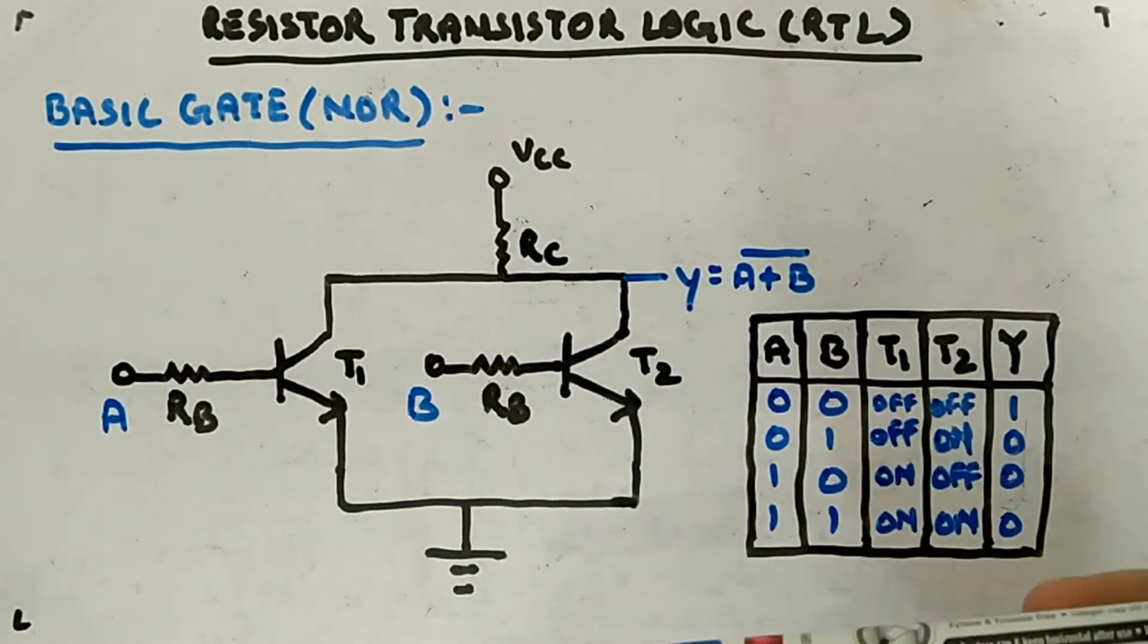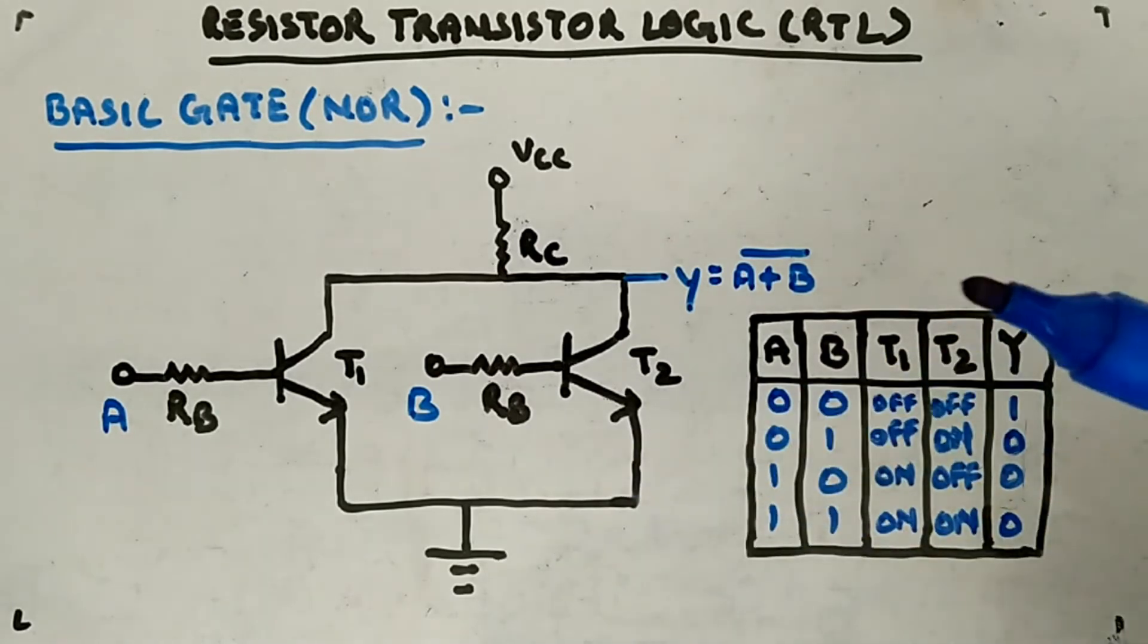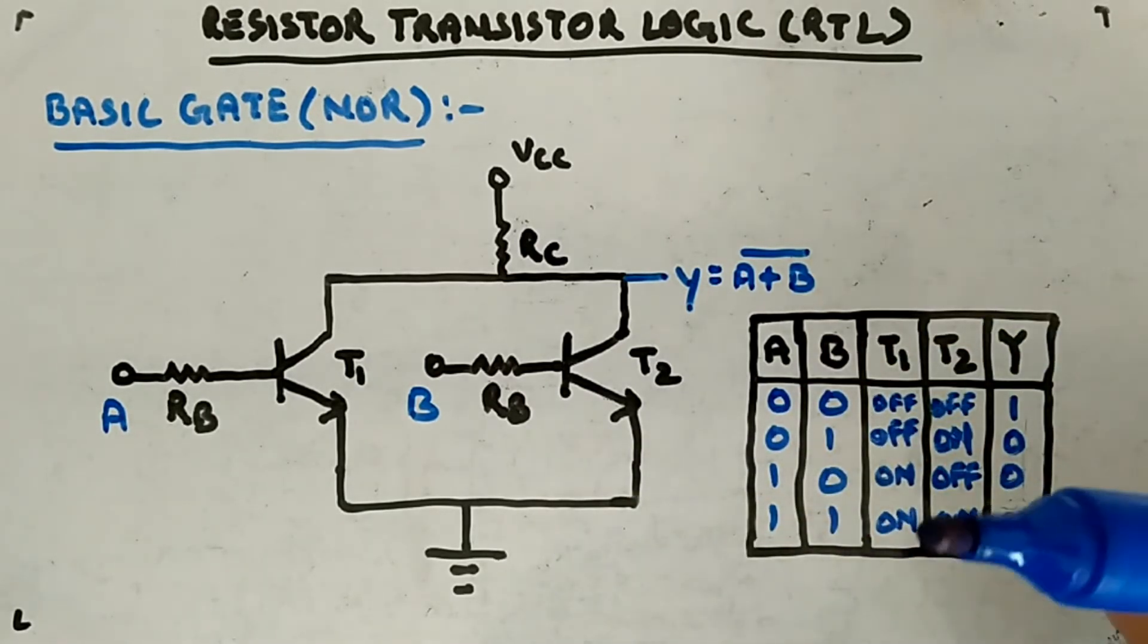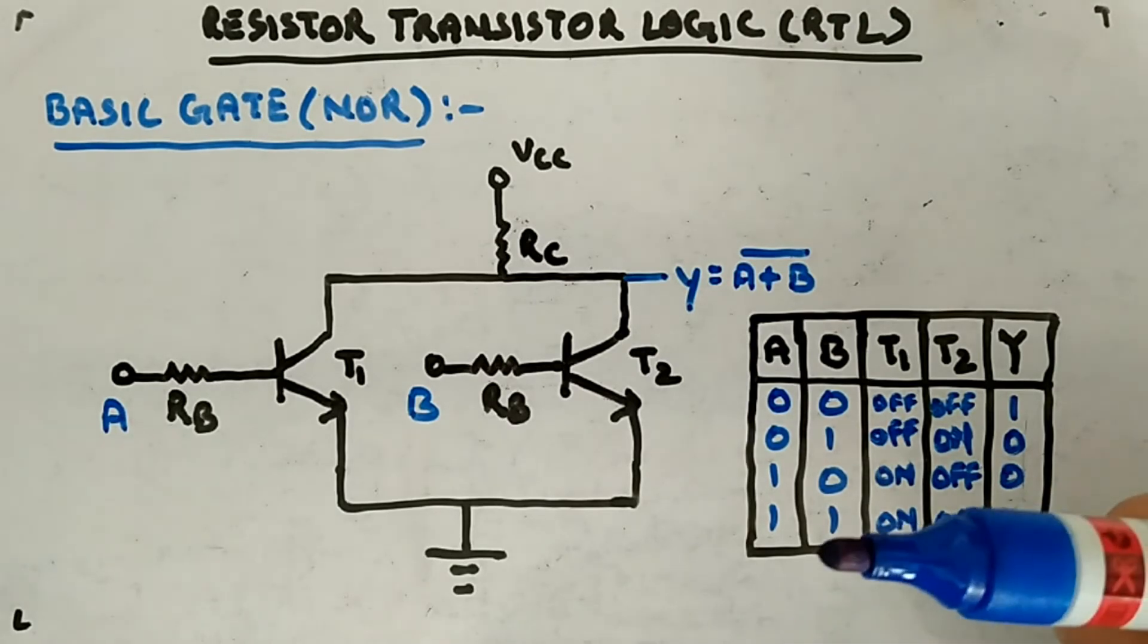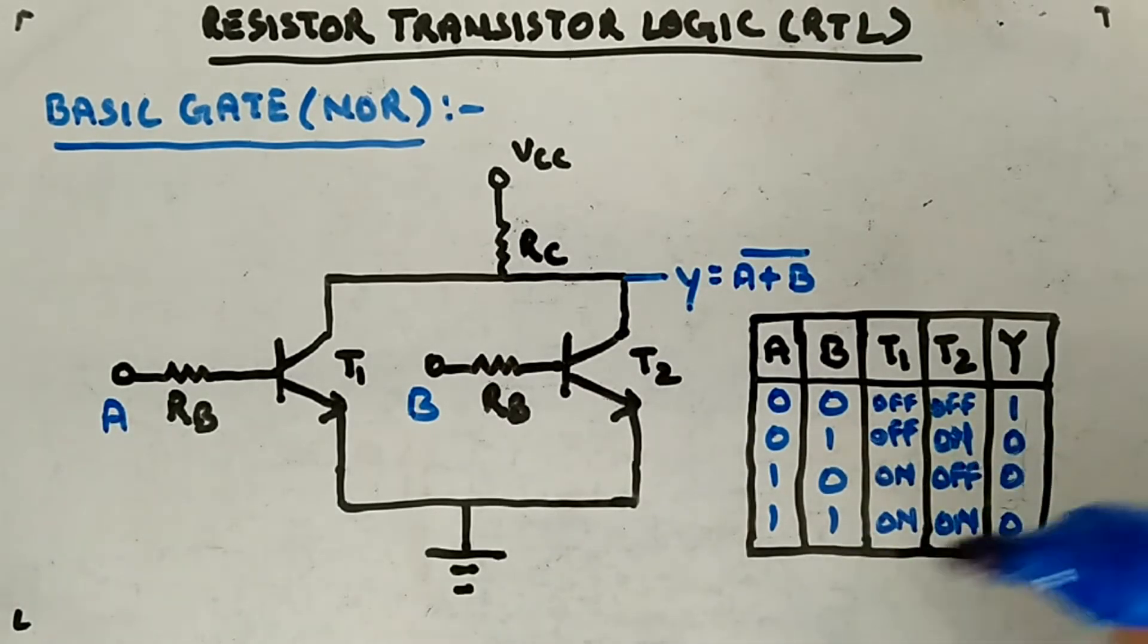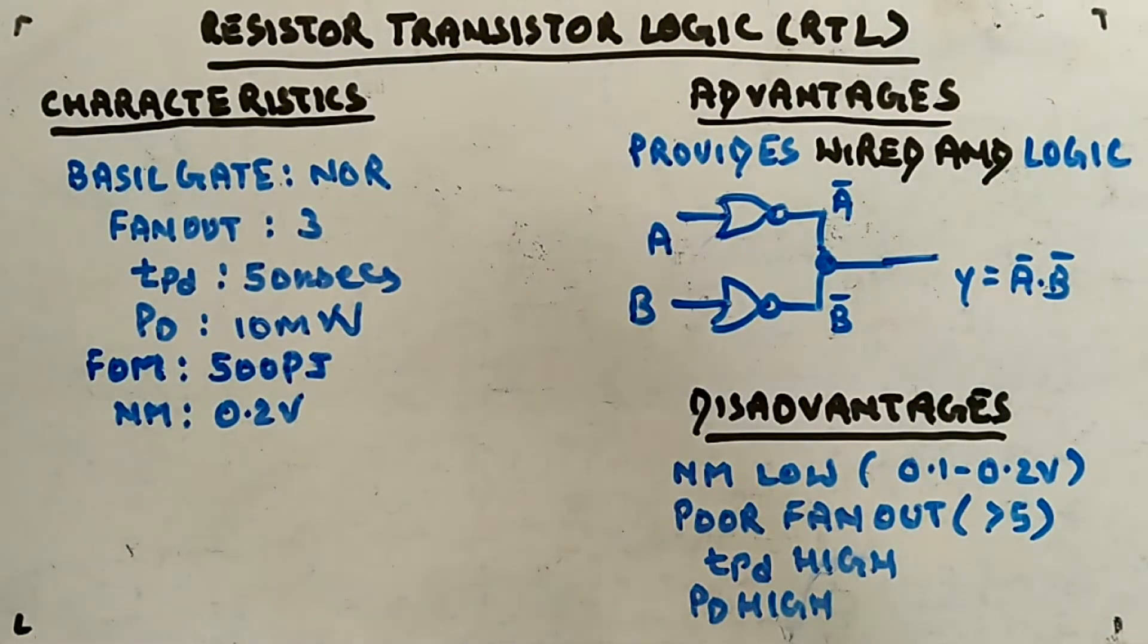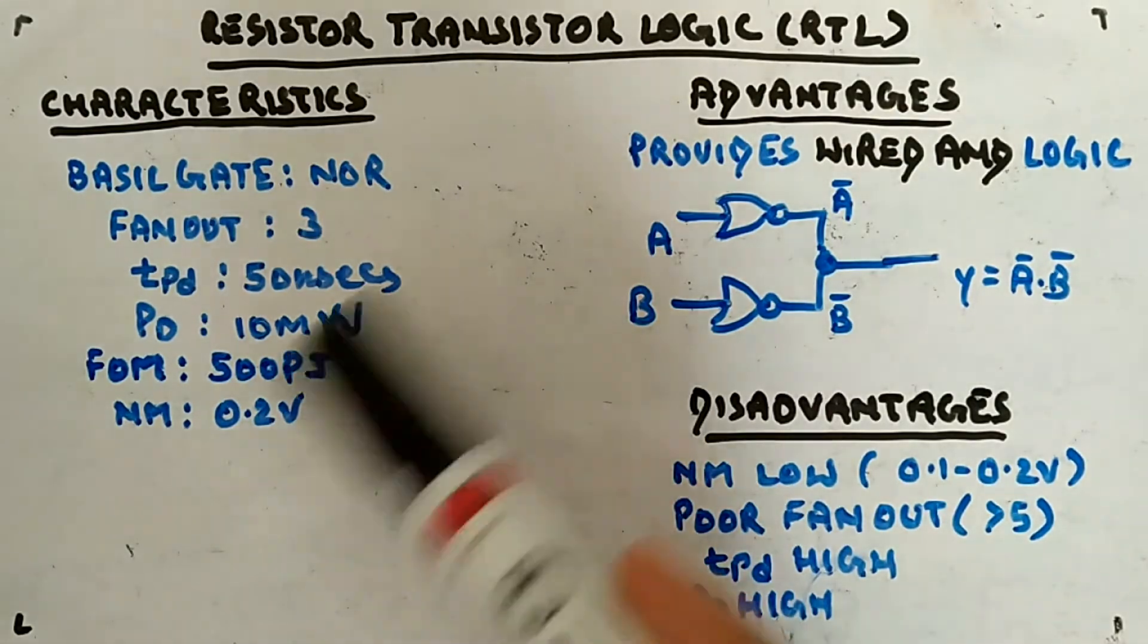Now what are the characteristics of this resistor transistor logic? I will tell you what is the fan-out, what is the power dissipation, propagation delay, advantages, disadvantages - all these we will see now.